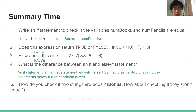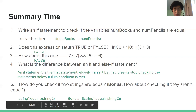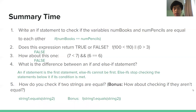Number four: how do you check if two strings are equal? We use string1.equals(string2). These are just variable names — you can call them whatever you want. If they are equal, this entire thing will be true. For the bonus — if they aren't equal — if string1 equals "hello" and string2 is "hi", that inner part would be false because hello is not hi. With an exclamation mark, it flips the false to true. So it's saying: it is true that string1 does not equal string2.